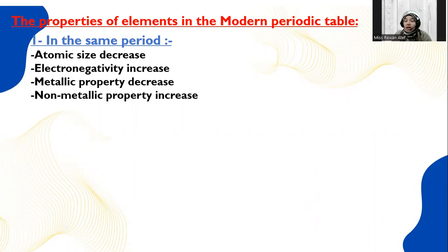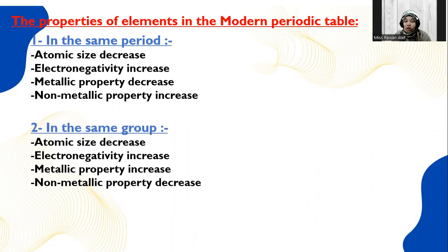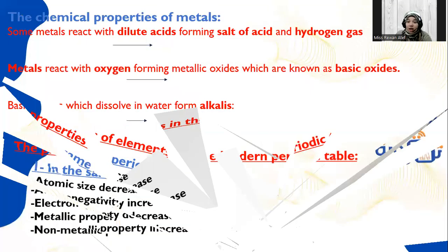The properties of elements in the periodic table: Elements are arranged in periods and groups. As we go from left to right in the same period, the atomic size decreases, electronegativity increases, metallic property decreases, and non-metallic property increases. For elements in the same group, as we go from top to bottom, the atomic size increases, electronegativity decreases, metallic property increases, and non-metallic property decreases.